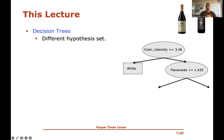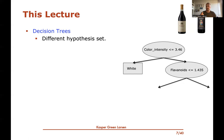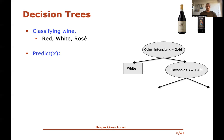One different type of model is decision trees — a different hypothesis set where instead of taking the sign of an inner product, you use a tree structure. For example, if the input is features of wine and we want to predict white, red, or rosé, we can train a decision tree for this. Decision trees require a different learning algorithm — we cannot reuse the perceptron.